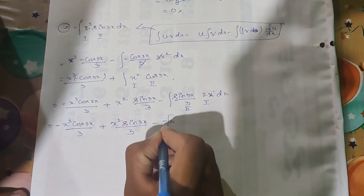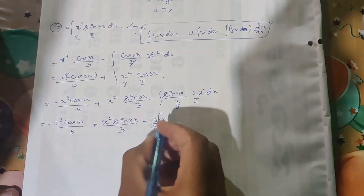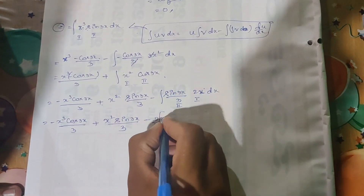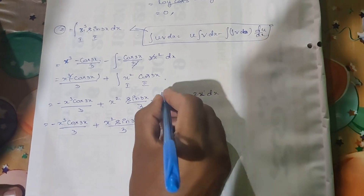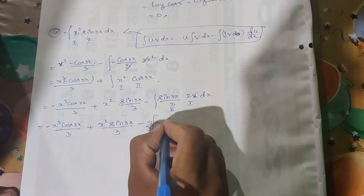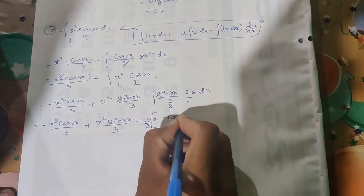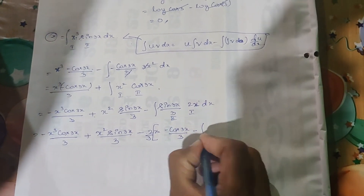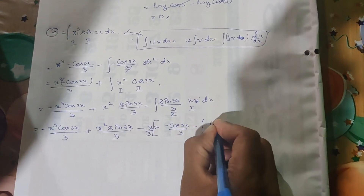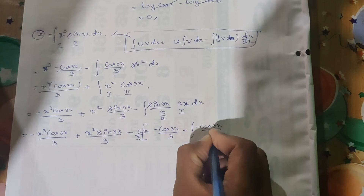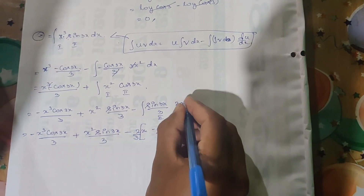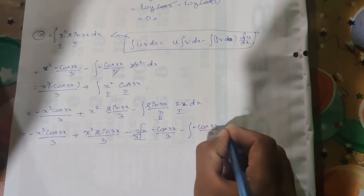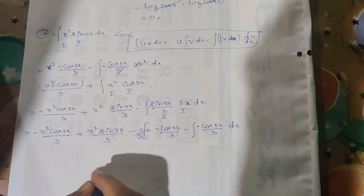With 2 by 3 outside, the first function is x and the integration of sin(3x) gives minus cos(3x) divided by 3. Then minus of minus cos(3x) divided by 3. The differentiation of x is 1, so 1 into dx.